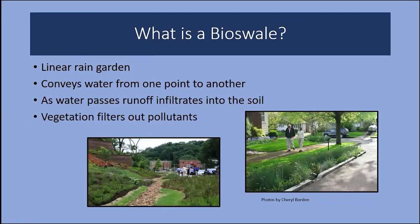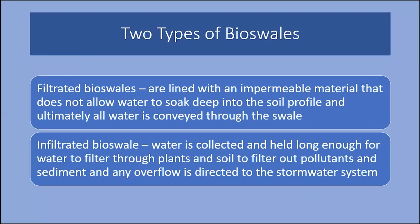So just what is a bioswale? A bioswale is a linear rain garden. It conveys water from one point to another, and as the water passes, the runoff infiltrates into the soil and the vegetation filters out the pollutants. There are two types of bioswales. Filtered or lined bioswales, where water is detained and collected and then piped directly into the stormwater system with no treatment of water. These are most often found in parking lots, office complexes, and other municipal facilities.